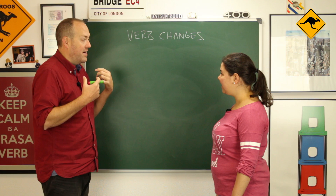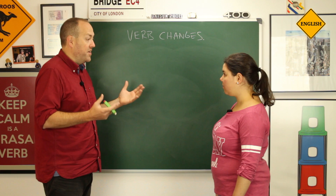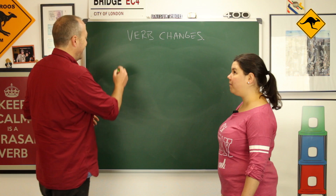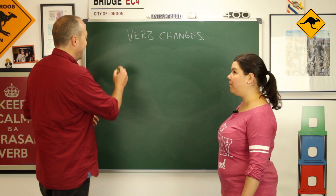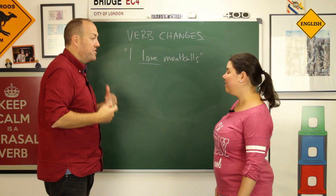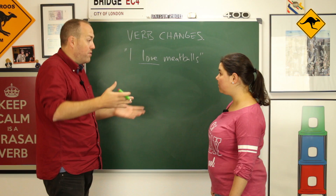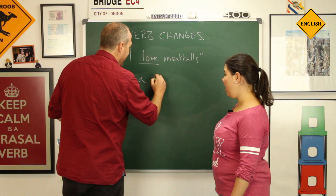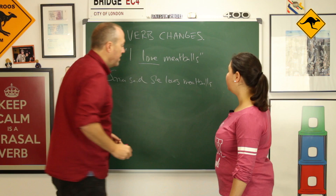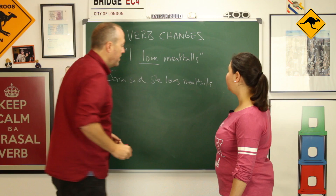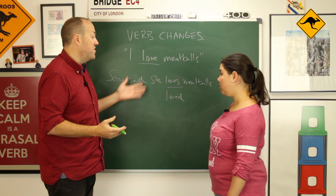What about stative verbs — verbs like things that don't change, like love and hate and like, emotions and feelings, or things that are true? So, what's your favorite food? I love meatballs. Something that you love generally doesn't change — in five years you will probably still love meatballs. So in this case, it's more natural to say: Sonia said she loves meatballs. I could use the past — it's not incorrect — but since this is something which is true all the time, the present sounds more natural.